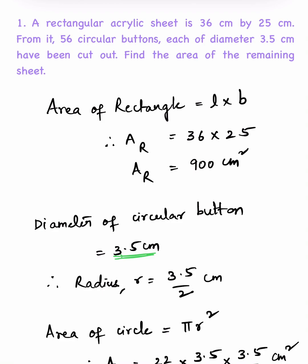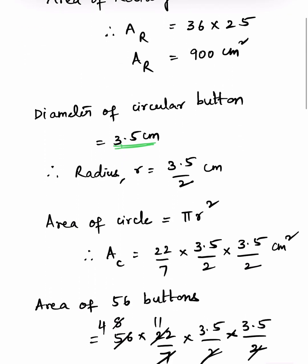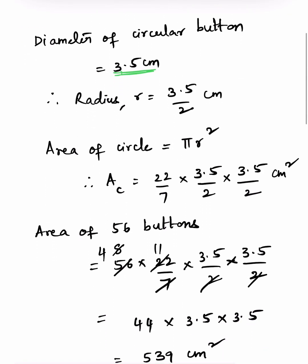Area of circle is π r square. Area of each circular button will be π r square, that is 22 by 7 into 3.5 by 2 into 3.5 by 2 cm square. This is the area of one circular button.